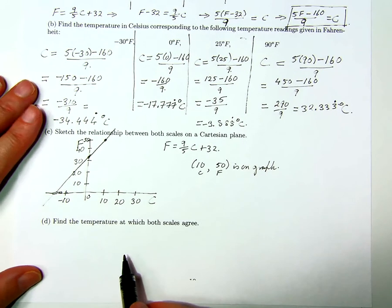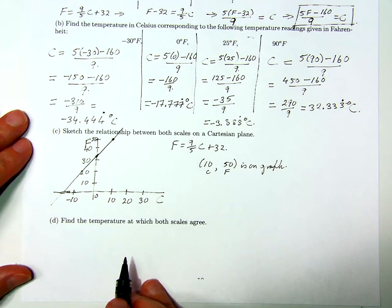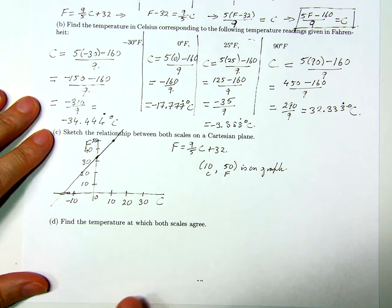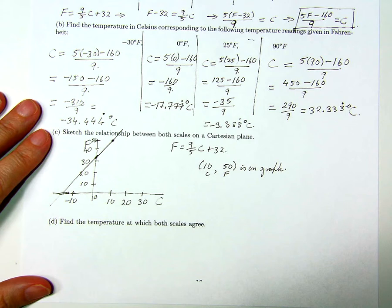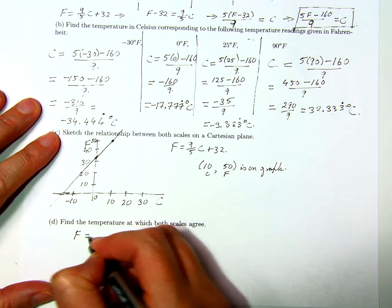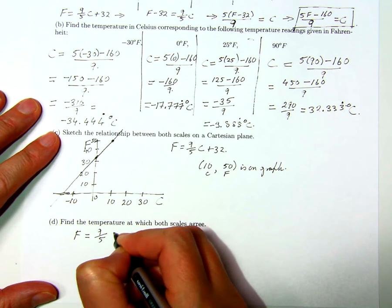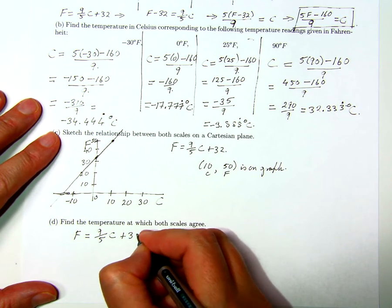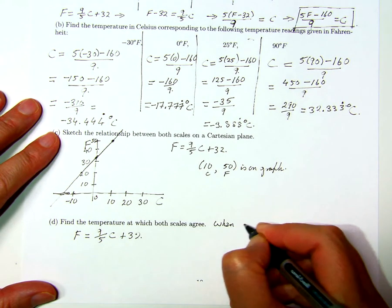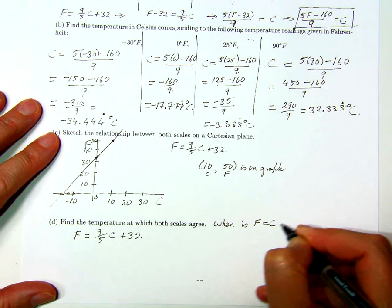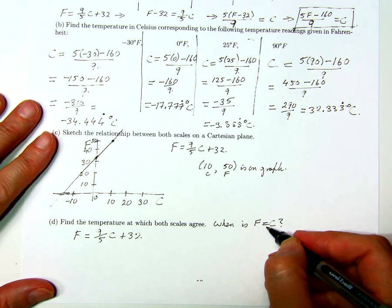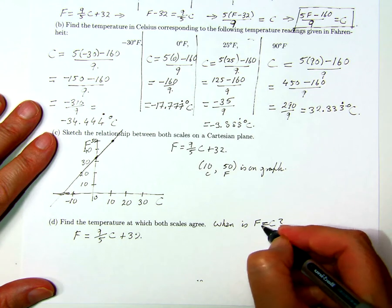Find the temperature at which both scales agree. This is an interesting problem — you should ponder on it before seeing the solution. We know that Fahrenheit is always 9 over 5 times the Celsius reading plus 32. The question is: when is F equal to C? That is, for what values are F and C the same?